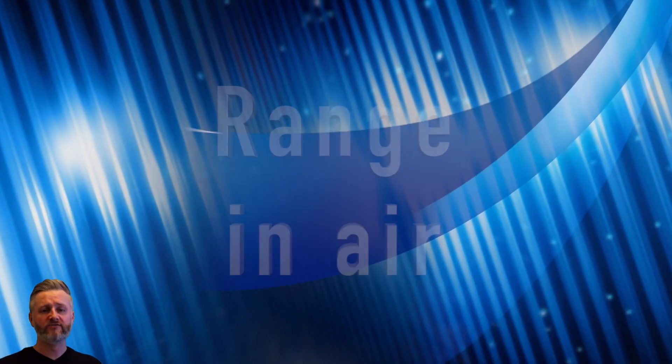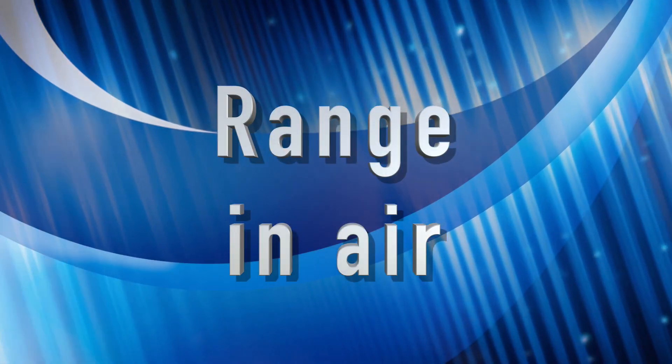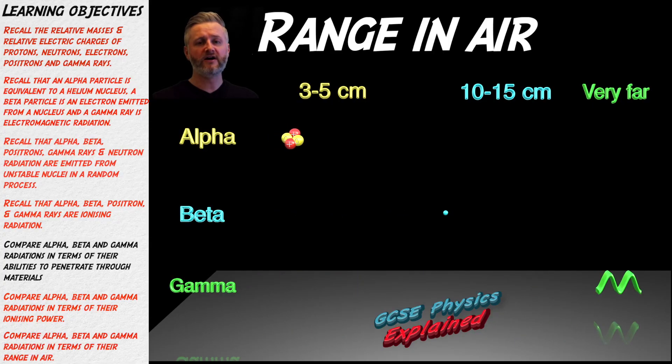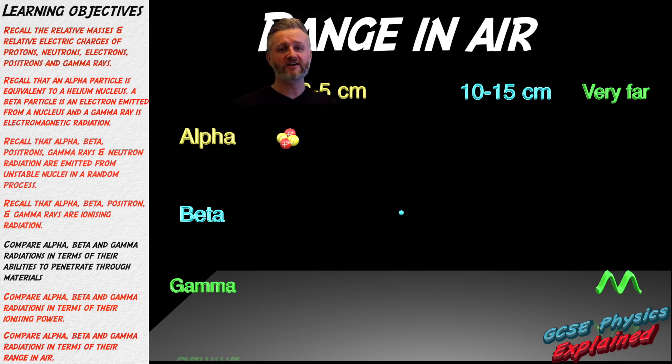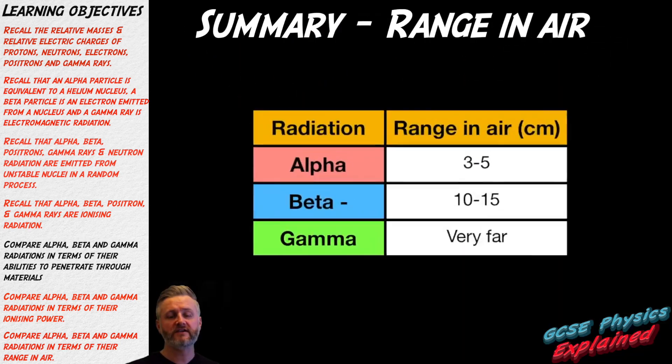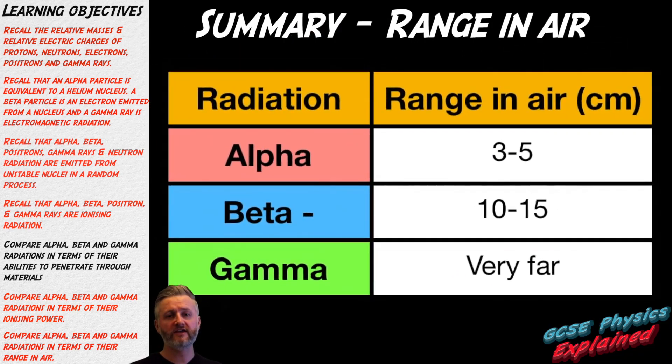Range in air of nuclear radiation. The range in air means how far will the nuclear radiation travel in air. You can see that alpha will only travel three to five centimeters in air. Beta travels 10 to 15 centimeters in air and gamma is capable of traveling very far distances in air. Here is a summary of the range in air that you need to know for your exams.